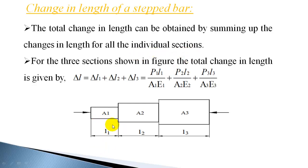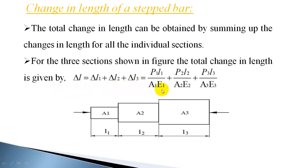The total change in length can be obtained by summing up the changes in length of individual sections. For the first section it is P1·L1/(A1·E1), for the second section it is P2·L2/(A2·E2), and the deformation of the third section is P3·L3/(A3·E3). After finding out the deformation of each section, you add all these, since they all add up to give the total deformation of the step bar. So δL = δL1 + δL2 + δL3 = P1L1/A1E1 + P2L2/A2E2 + P3L3/A3E3. This is the formula for the total change in length of a step bar.